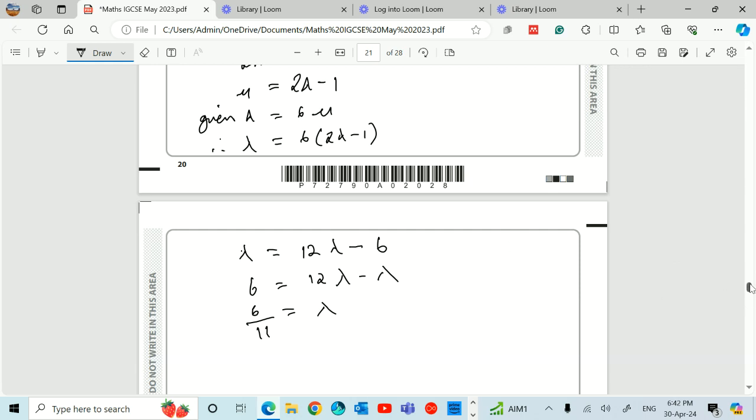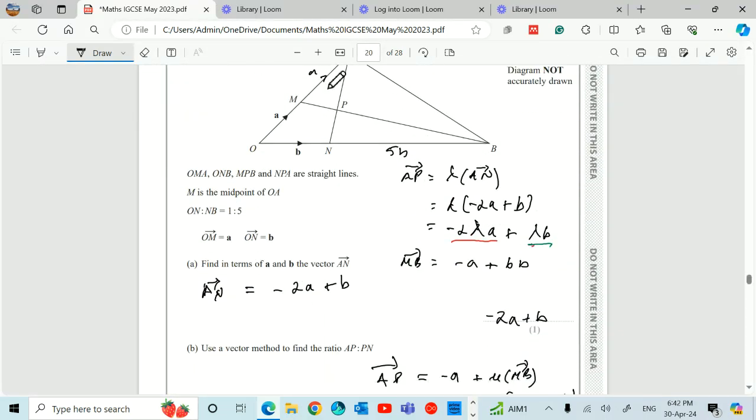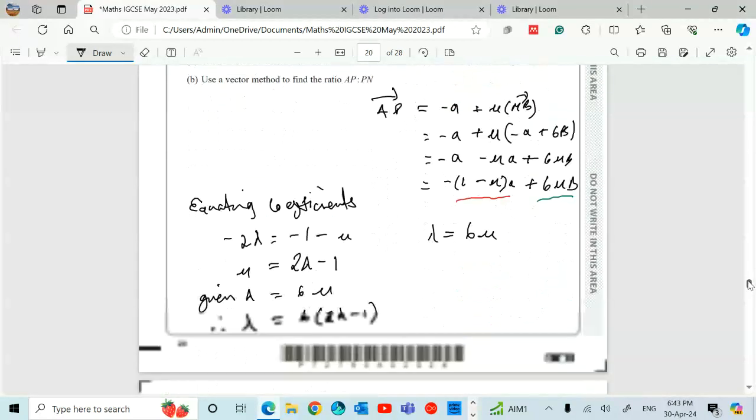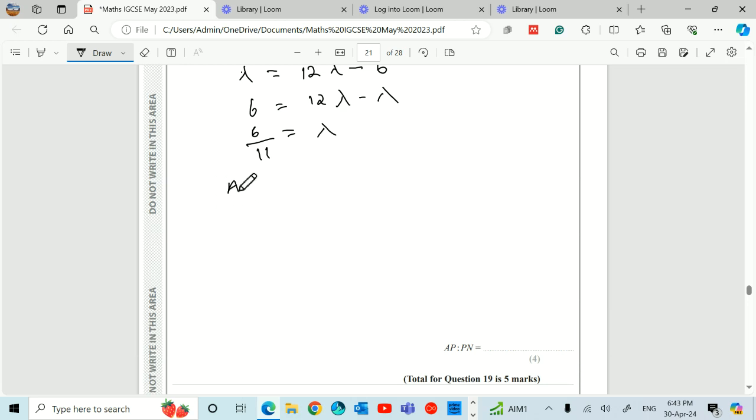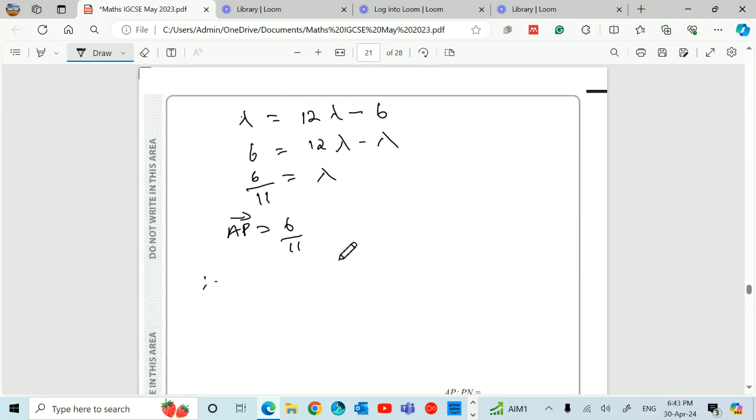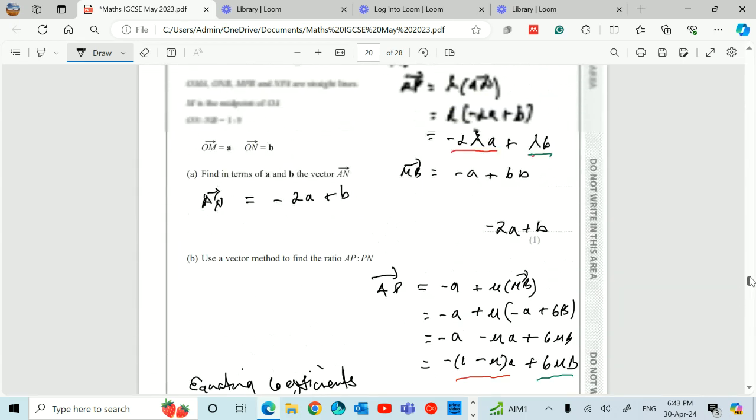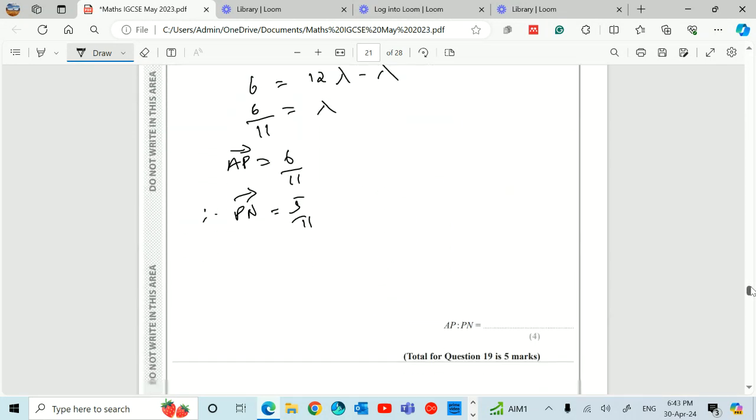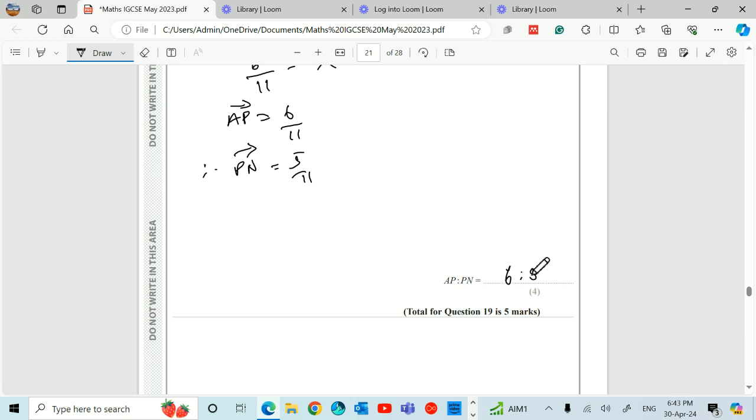Well, if that's 6 over 11, that's the value of AP, isn't it? AP, then, this bit will be 6 over 11. If AP is 6 over 11, then PN must be 5 over 11. Because of course it's got to add up to 1. So AP, we know is equal to 6 over 11, and therefore we know that, as we stated, we know that PN, therefore PN will be equal to 5 over 11. And it's asking you the ratio of AP to PN. Well, that'll be 6 to 5. AP to PN, 6 to 5. And oh, and that's for 4 marks. That's a lot of work for 4 marks. But that's how you do.